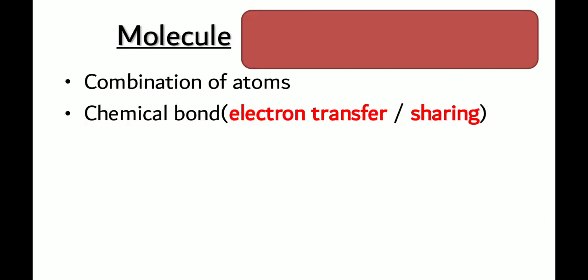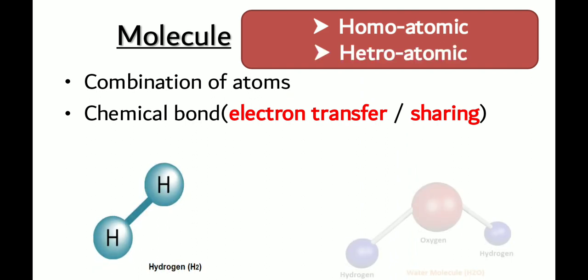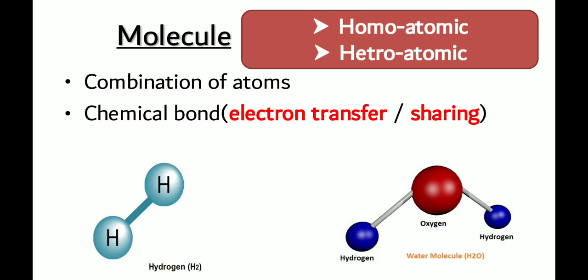Next is molecule. A molecule is a combination of atoms that are chemically bonded. Chemically bonded means either there is sharing of electrons between them, or there has been a loss and gain (transfer) of electrons, resulting in a chemical bond. There are two types of molecules: homoatomic and heteroatomic. Homoatomic molecules are composed of the same type of atoms — for example, H₂, where both atoms are hydrogen.